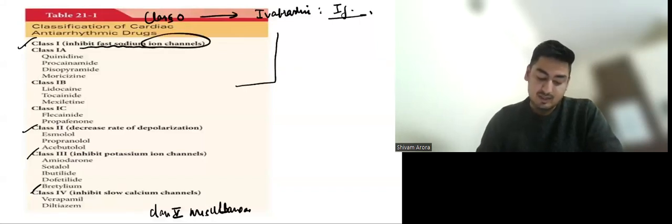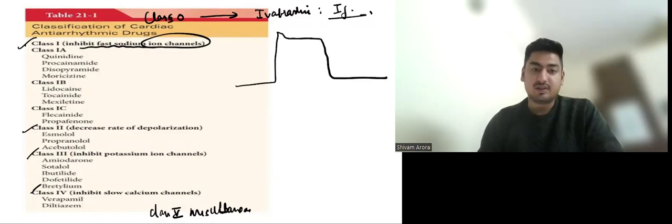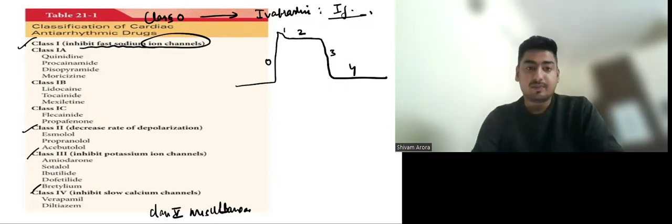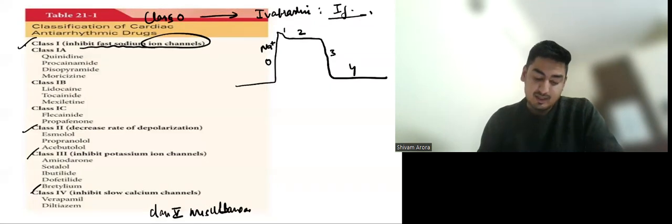So myocardial tissue action potential I am going to draw. So this is the action potential, this is phase 0, this is phase 1, 2, 3 and 4. So in this, this phase 0 is because of sodium channel and phase 3 is because of potassium channel.